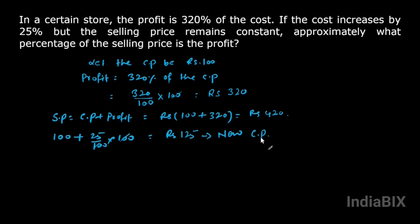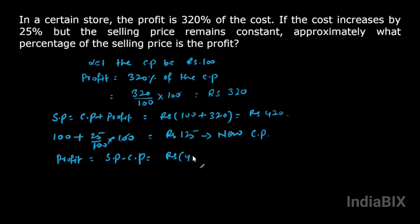Now what will be the profit in the second case after the cost price increases? Profit is selling price minus cost price. There is no change in the selling price — it remains rupees 420. The new cost price is 125, therefore the new profit will be 420 minus 125, which is 295.